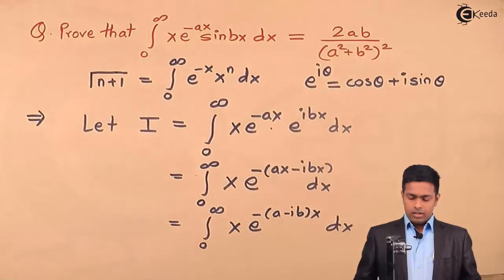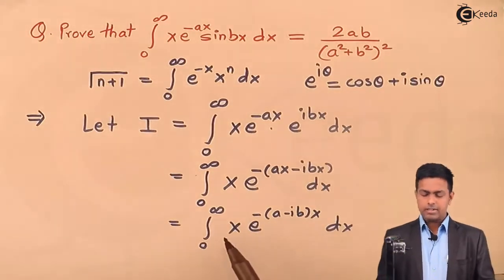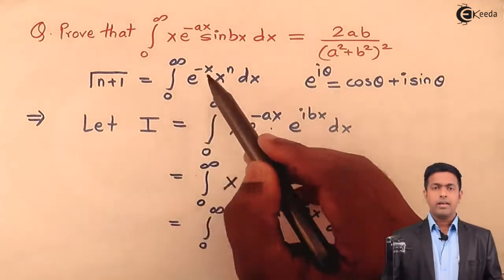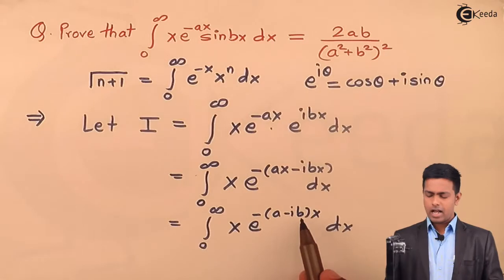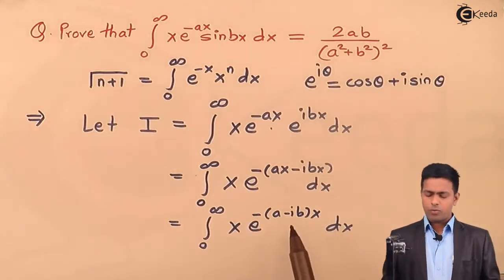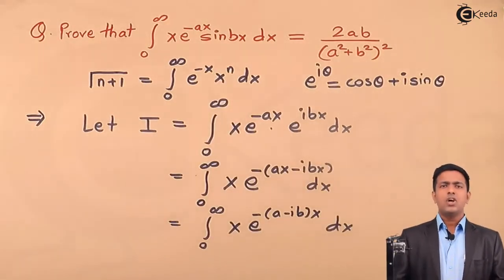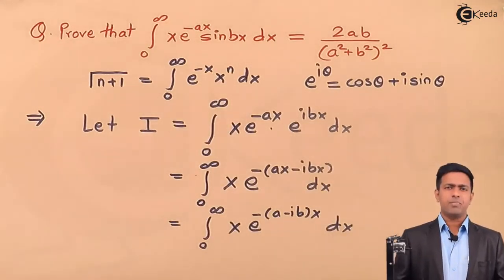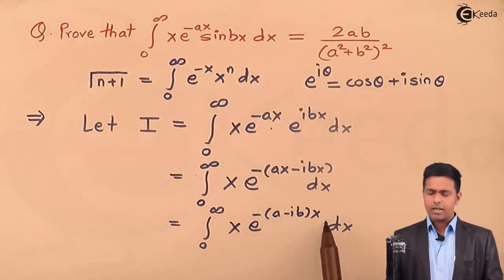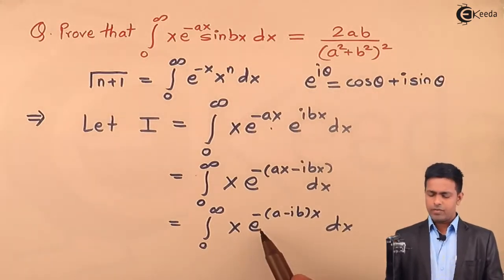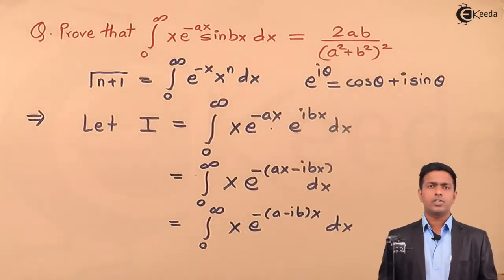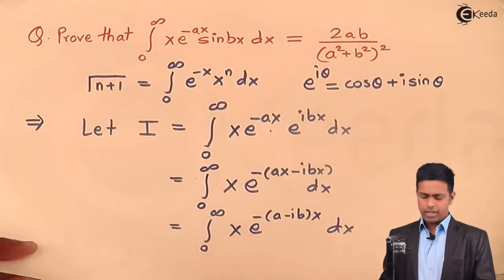This becomes integration from 0 to infinity of x times e raised to minus(a minus ib) times x dx. The form matches the gamma function definition, but the power of e is minus(a minus ib)x rather than minus x. To convert it to the standard form with minus t, we use integration by substitution, putting (a minus ib) times x equal to t, so we get e raised to minus t.